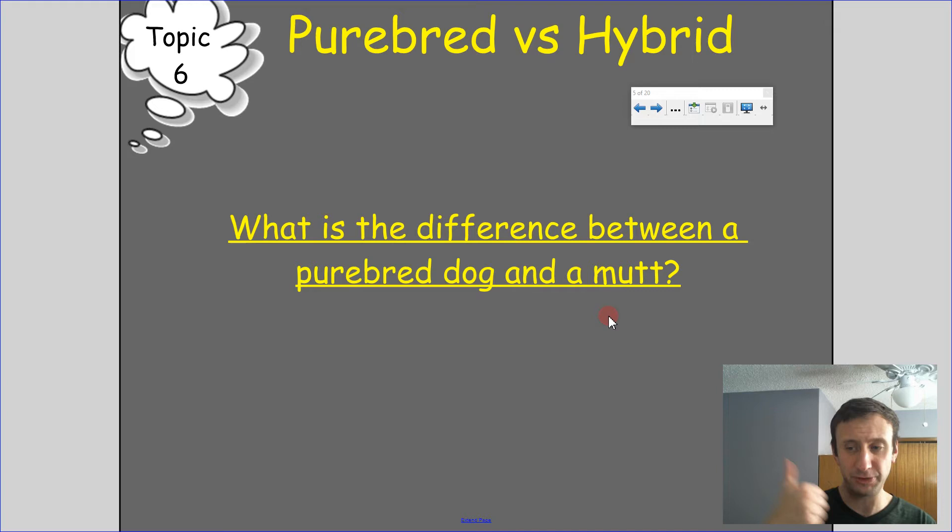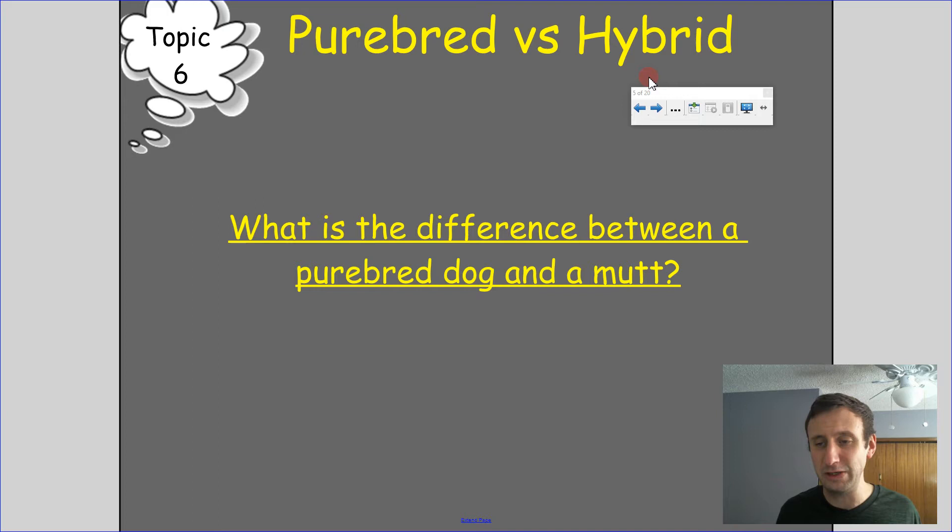What do you think is typically healthier — a purebred or a mutt? The answer is a mutt, because when we have more genetic diversity, we don't have as many weird genetic recessive diseases or problems showing up.